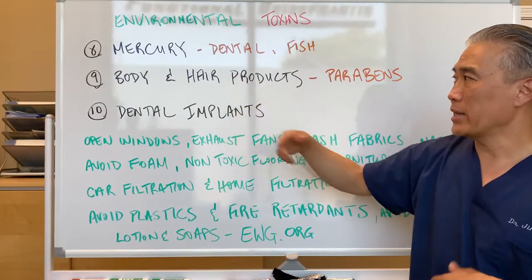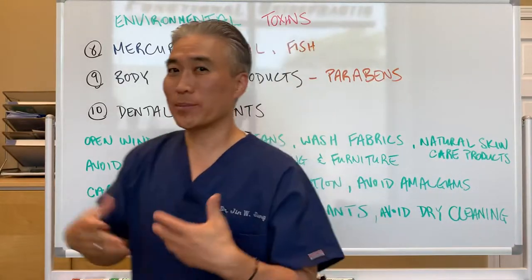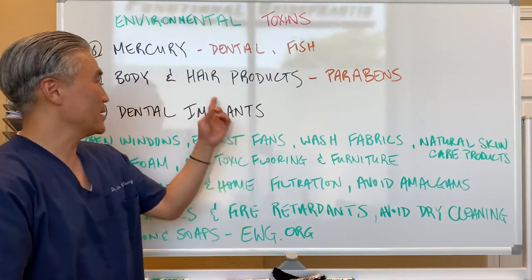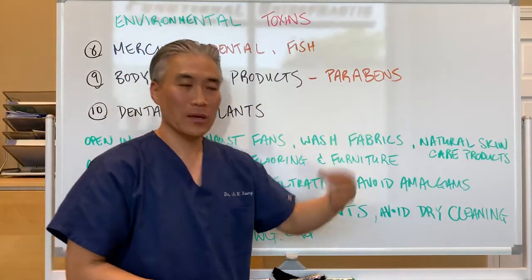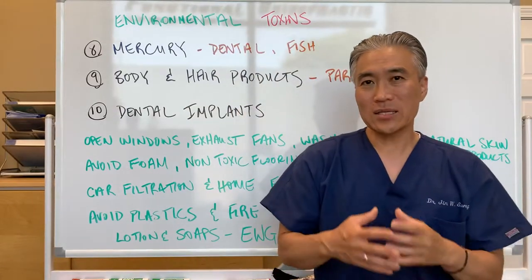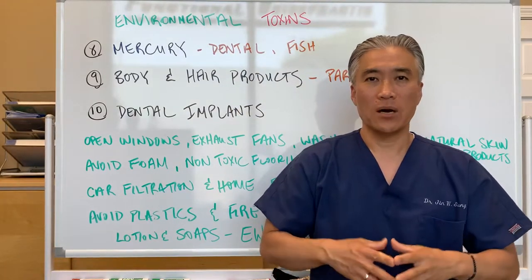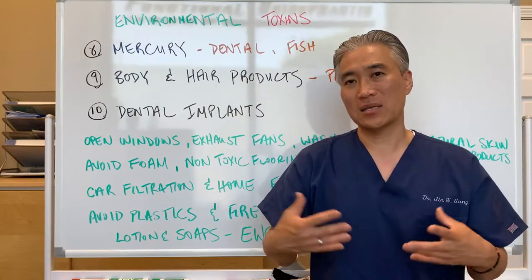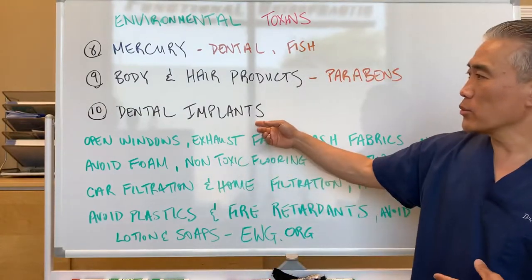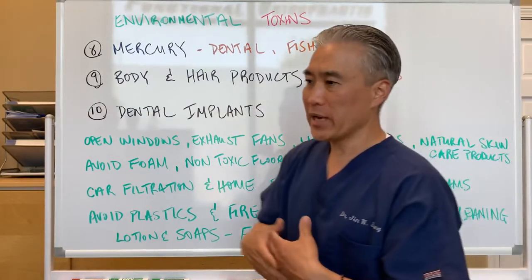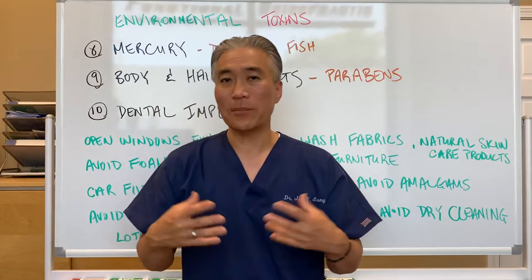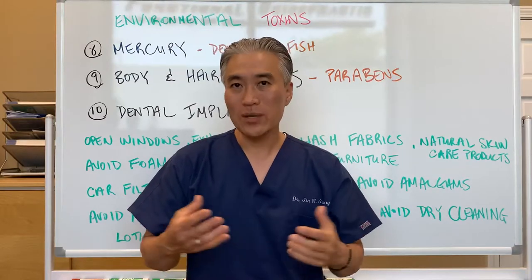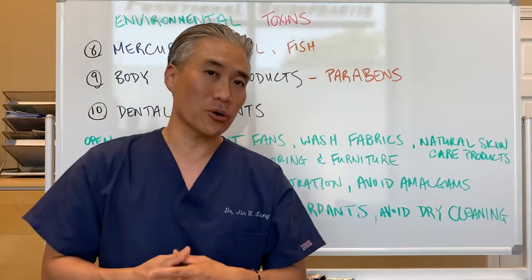Another thing is body and hair care products. A lot of lotions and potions are being used, especially within the younger generations, and they have things like parabens in them, which can be very detrimental. A lot of these VOCs, environmental toxins, and so forth are really endocrine disruptors and impact detoxification systems. Another one is dental implants — when you have a lot of dental implants, these are metals screwed into the bone, and they will leach some of the metal into your system.